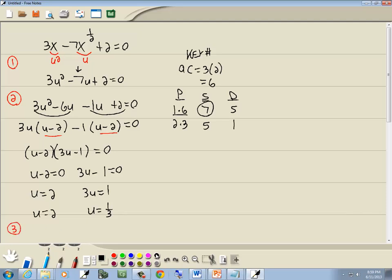Step 3. Plug u equals blank back in. In this particular problem, we said u is equal x to 1 half. So we're going to put in x to 1 half for u. So we've got x to 1 half is equal to 2, and x to 1 half is equal to 1 third.